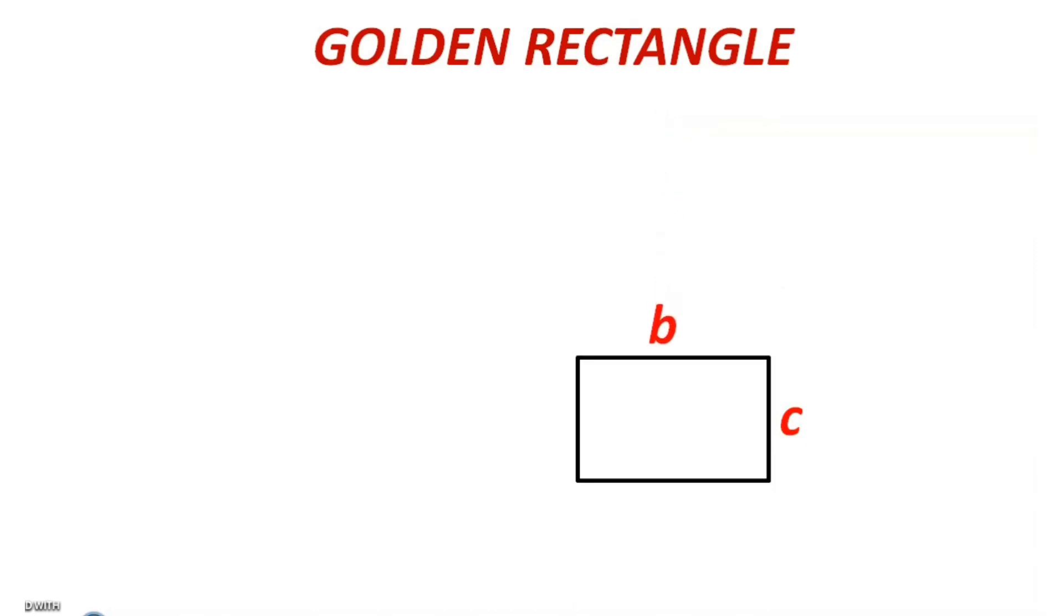If we remove this square of side b, we are again left with another golden rectangle of sides b and c. Again divide this rectangle into a square of side c and a rectangle of c and d. Then remove this square of side c. Next we will be left with another golden rectangle. Again divide this rectangle into a square of side d and a rectangle of sides d and e.